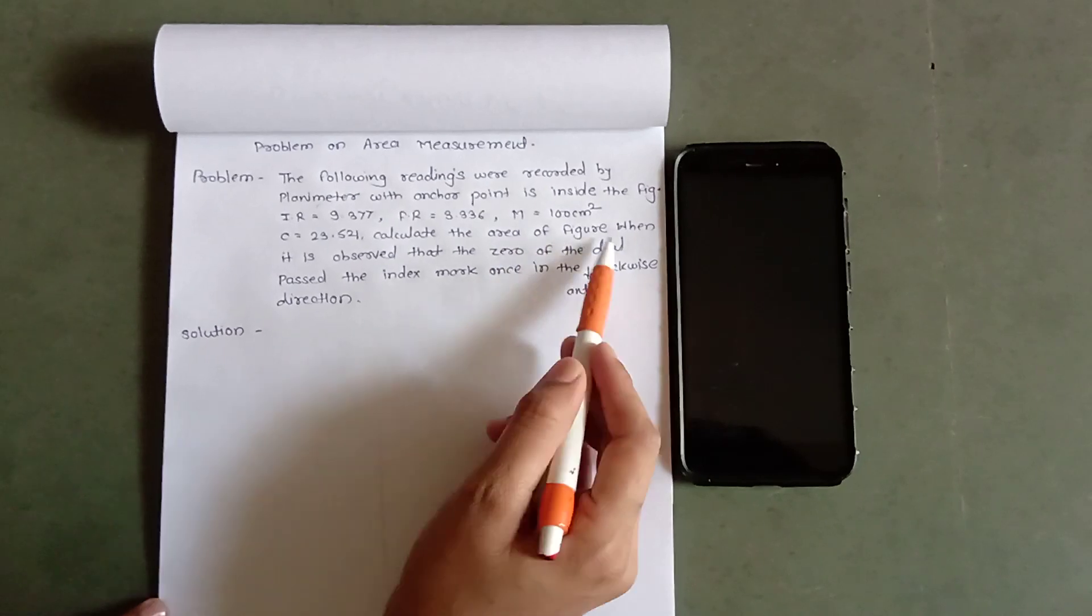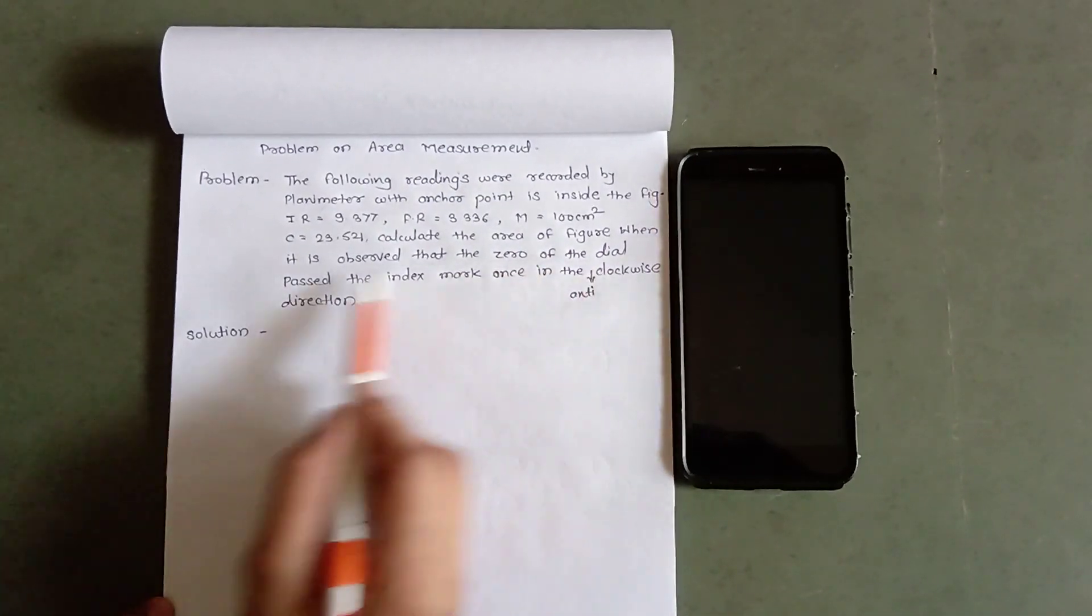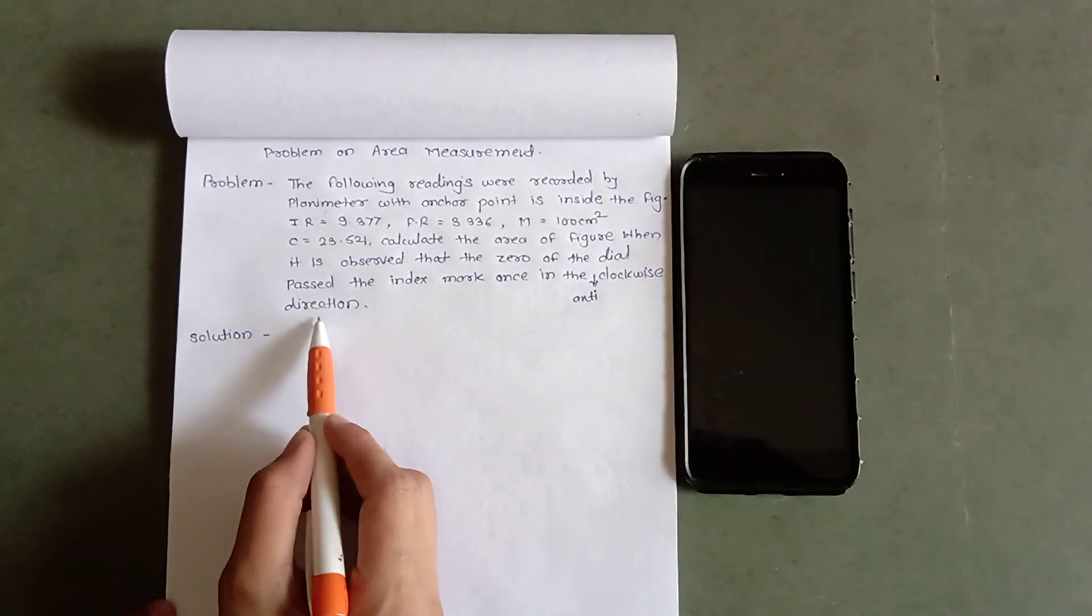Calculate the area of the figure when it is observed that the zero of the dial passed the index marks once in the anticlockwise direction.